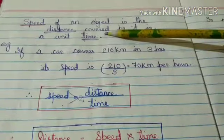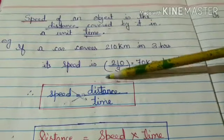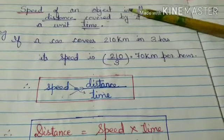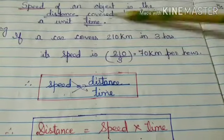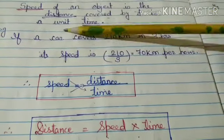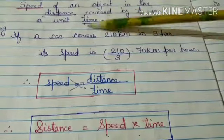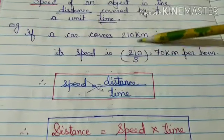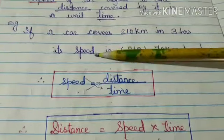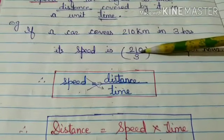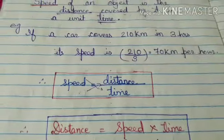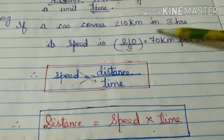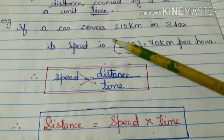Good morning students. In this video we will discuss speed, distance, and time. The speed of an object is the distance covered by it in a unit time. Speed depends on distance and time. For example, if a car covers 210 kilometers in 3 hours, then the speed will be 210 kilometers divided by 3 hours, which gives us 70 kilometers per hour.